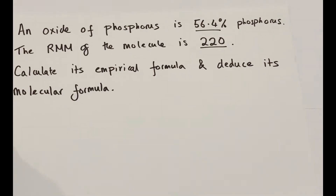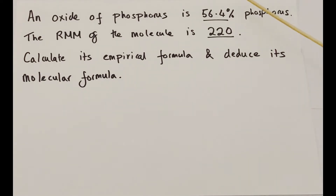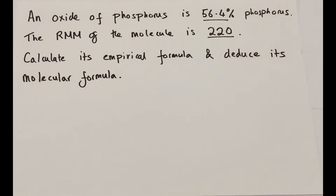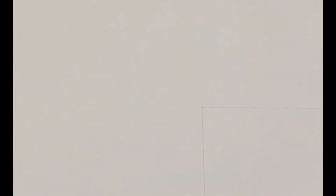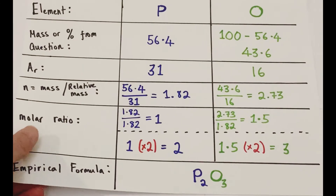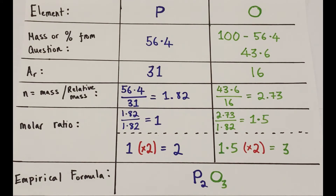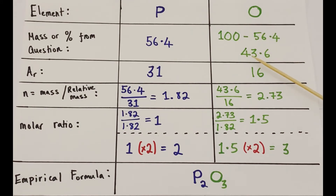Here is a final question covering every key aspect of empirical and molecular formula. An oxide of phosphorus is 56.4% phosphorus by mass, and the relative molecular mass of the entire molecule is 220. Calculate the empirical formula, then deduce its molecular formula. Since 56.4% is phosphorus, the rest must be oxygen: 100 − 56.4 = 43.6% oxygen.